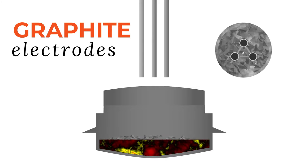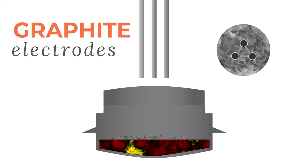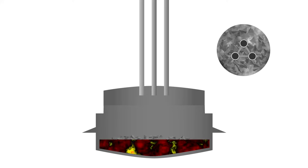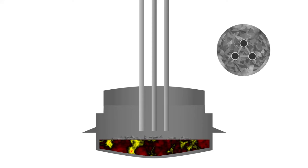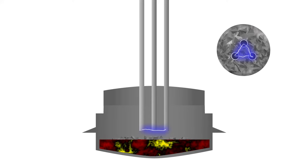Graphite electrodes, typically three of them arranged in a triangular fashion, are lowered into the furnace through ports in the roof. Electric current, usually three phase alternating current, hence why three electrodes, is passed through the electrodes, creating an arc.